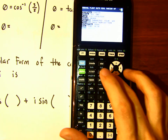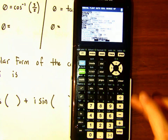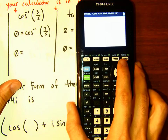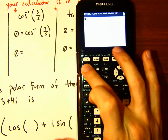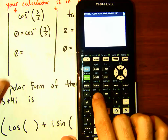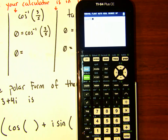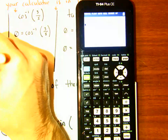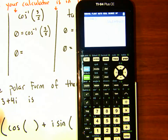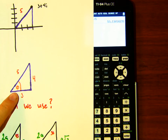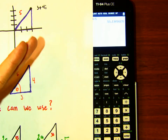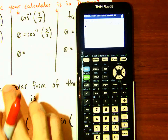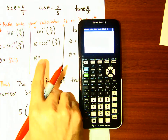Now it's in degree mode. Let's do the inverse of sine — go to second, then sine, and you'll see sine to the negative one. Hit inverse sine of four divided by five and we get 53.13. So this angle of elevation — this argument theta — has to be 53.13 degrees.